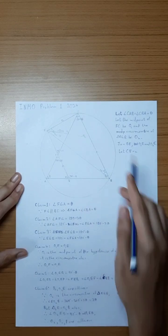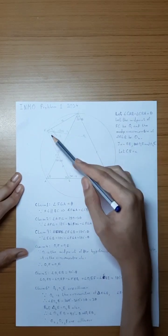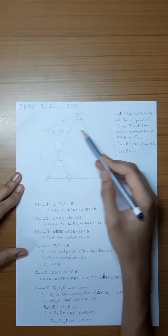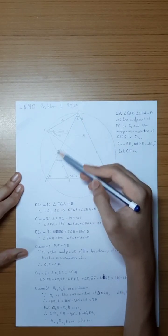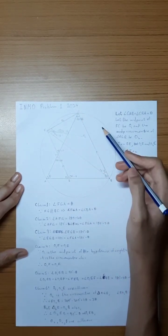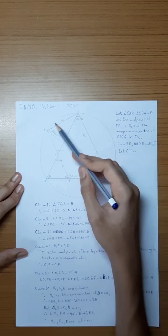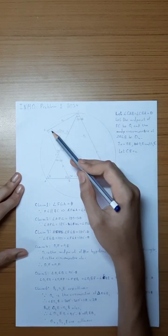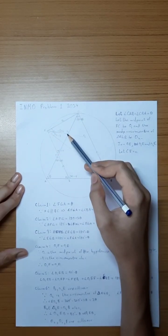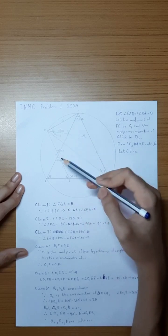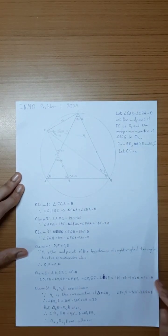We need to prove that O1F equals O1E. Since O1 is the midpoint of the hypotenuse FC, O1 is the circumcenter of triangle ECF, and therefore O1E equals O1F.